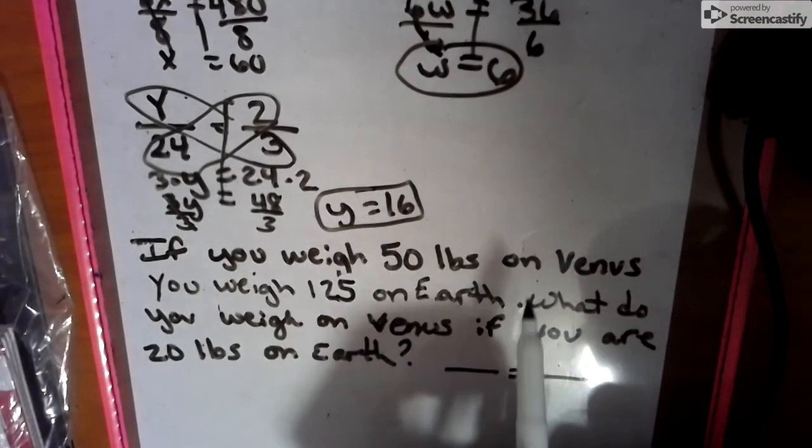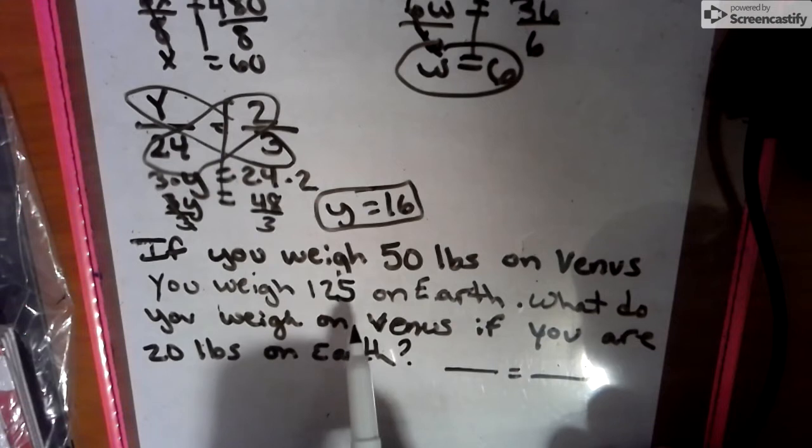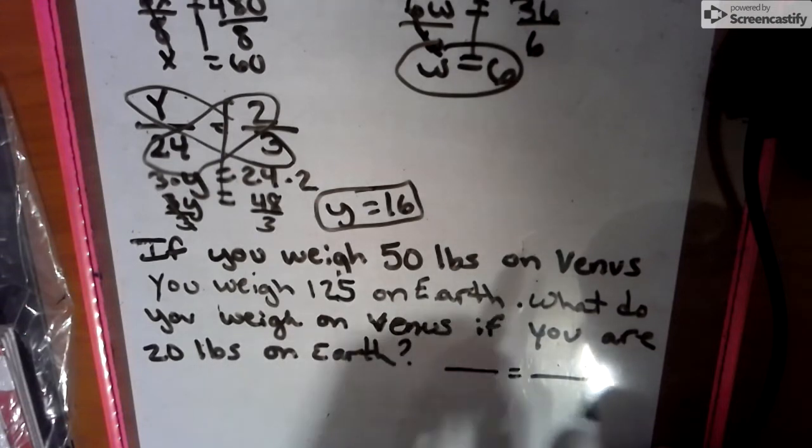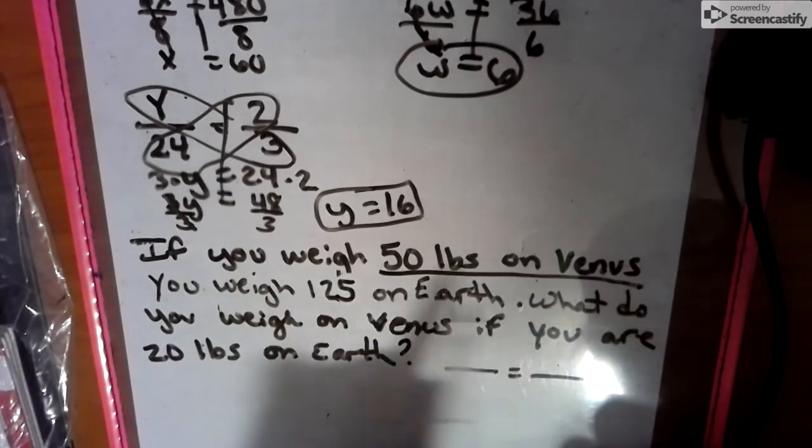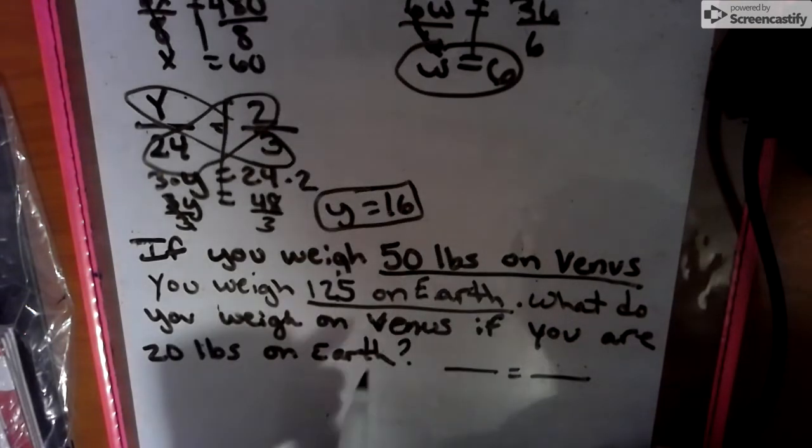Now, if you weigh 50 pounds on Venus, you weigh 125 on Earth. What do you weigh on Venus if you are 20 pounds on Earth? Okay. Let's see what we got. We got 50 pounds on Venus, 125 on Earth. Those two things go together.